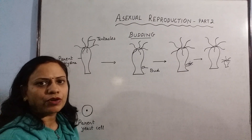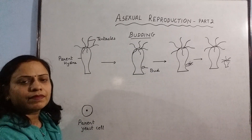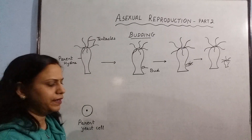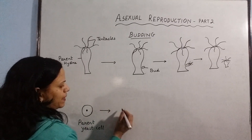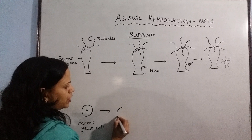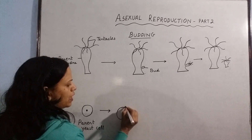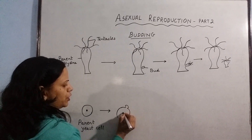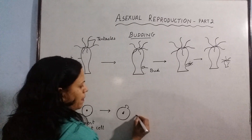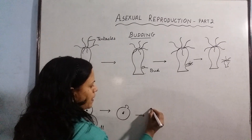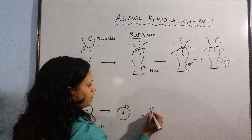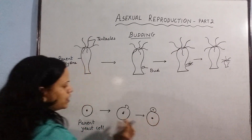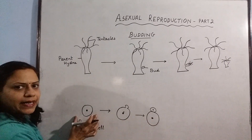The second example we are going to take is a yeast cell. Yeast is a unicellular plant. In yeast, when budding takes place, first the nucleus divides and a small outgrowth is formed — this is the bud. The nucleus divides and the smaller part moves into the bud. This is the parent yeast cell.